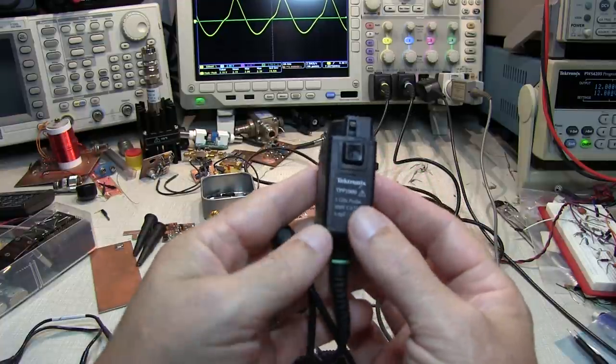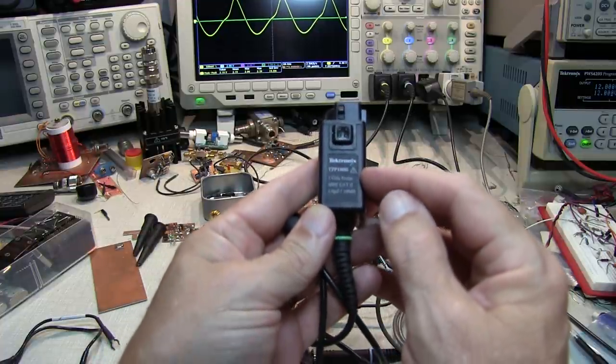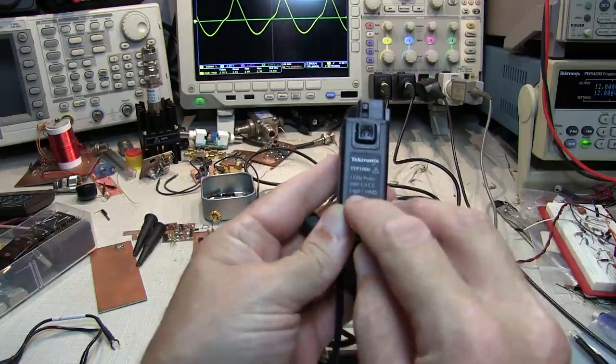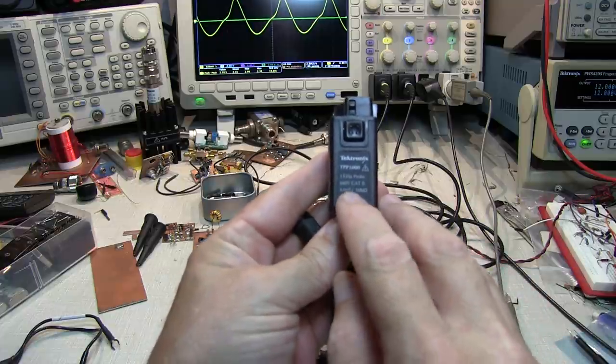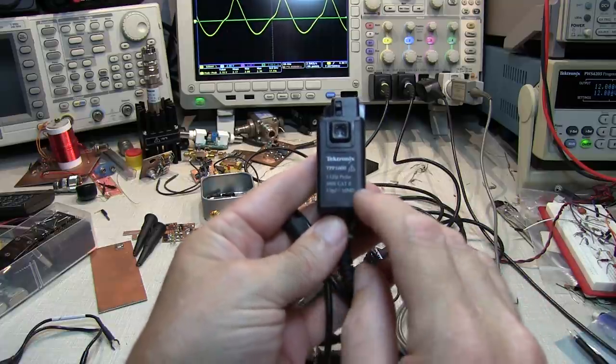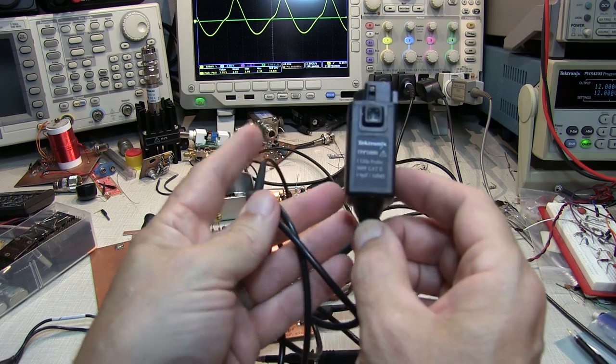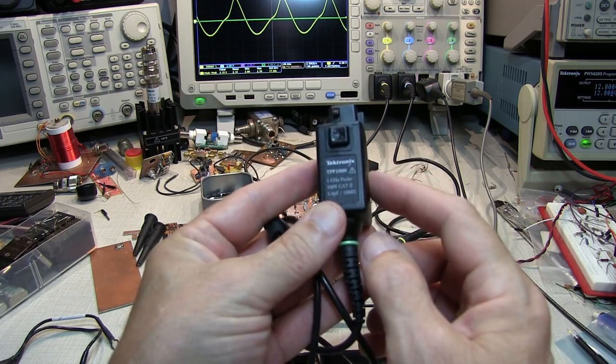A bit of a standout in the field of passive probes is this TPP1000, a 1 gigahertz passive probe. Only 3.9 picofarads of loading, and that's about the lowest you'll find in any passive probe, but there's only certain scopes that this particular probe will work with.